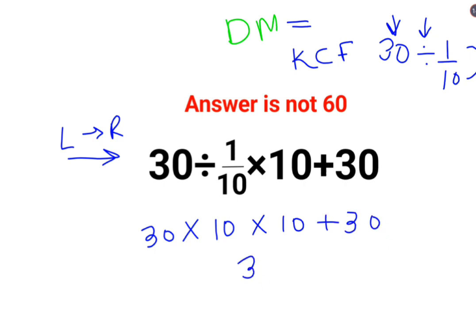So we have 3000 plus 30. The answer for this question is supposed to be 3030.